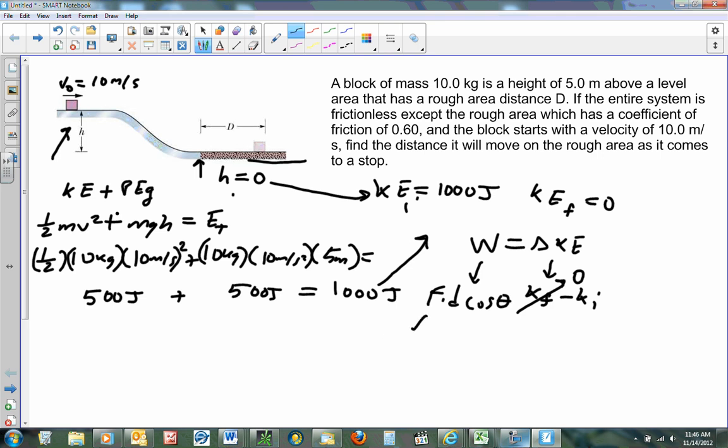So what kind of force do we have? Well, if we look at this block, if we just draw a diagram of it, we have the force of gravity down, that's 100 newtons. We have the normal force up, which is also going to be equal to 100 newtons. And then we have this frictional force back. That's the only force that's slowing it down and taking energy away.